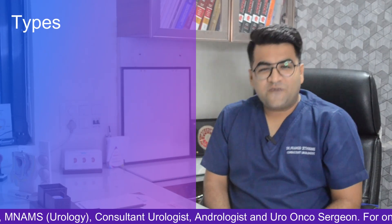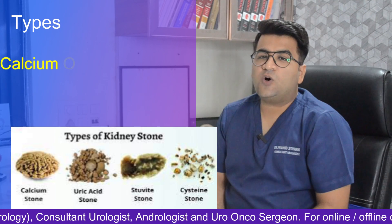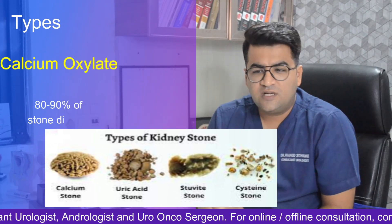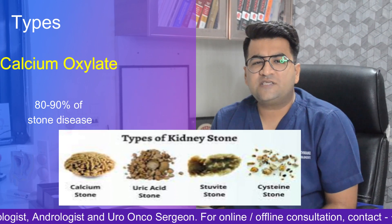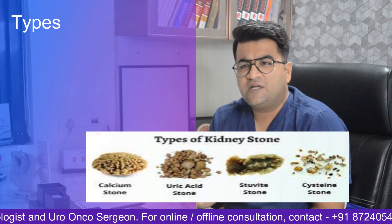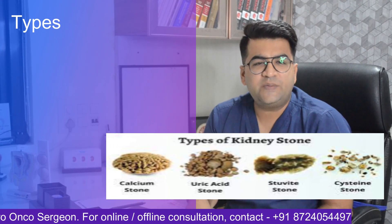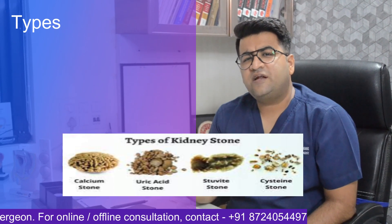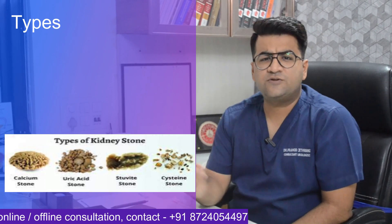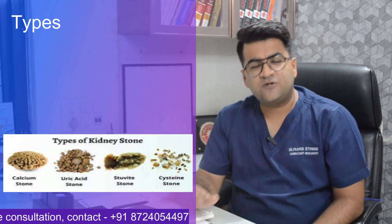The most common type of kidney stone is calcium oxalate, which accounts for 80 to 90 percent of stone diseases. There are a few other types of calcium stones including calcium phosphate and calcium triple phosphate. The second most common type is uric acid stones, which account for 8 to 10 percent. There are also rare stones like cysteine stones and struvite stones — struvite stones are more commonly called infectious stones.